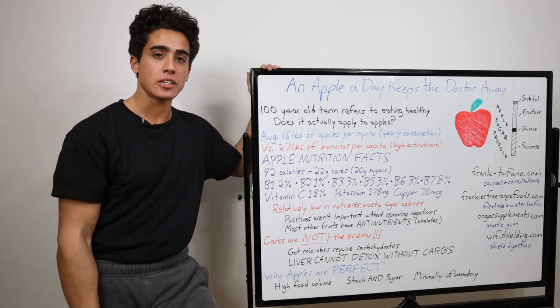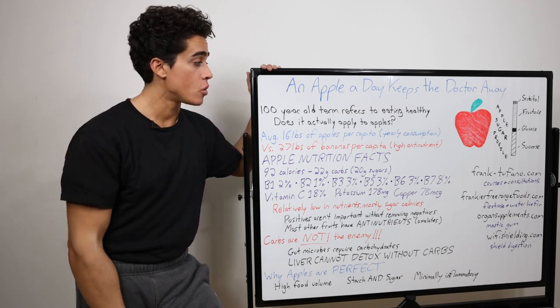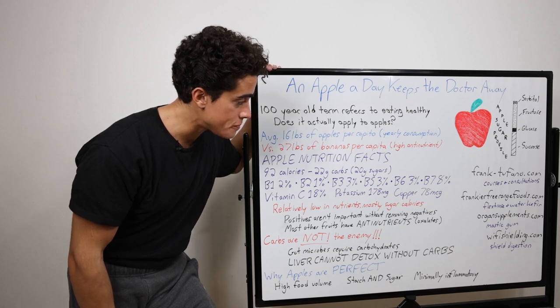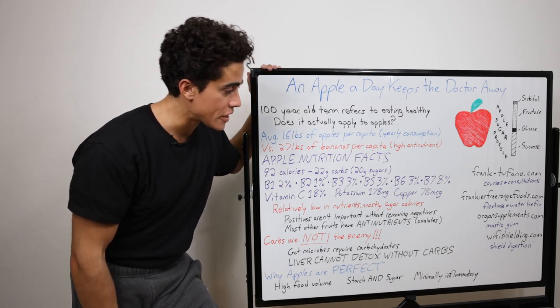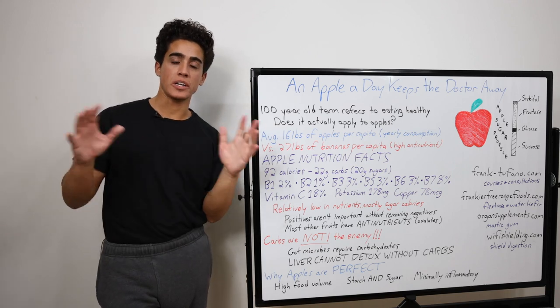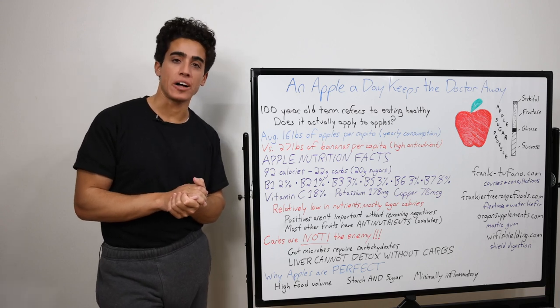organsupplements.com, the Masticum, excellent to take if you're having a hard time digesting sugar or passing certain foods. And WifiShielding.com, I guess even more important than everything else, you want to shield your liver and digestive system from radiation, which can be a real catastrophe and is a catalyst for many people's health issues.